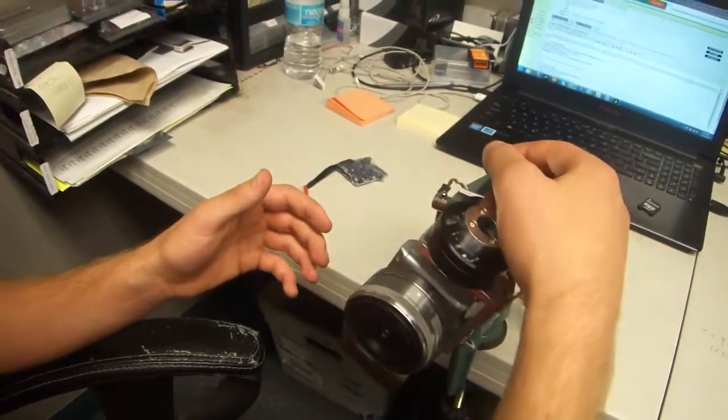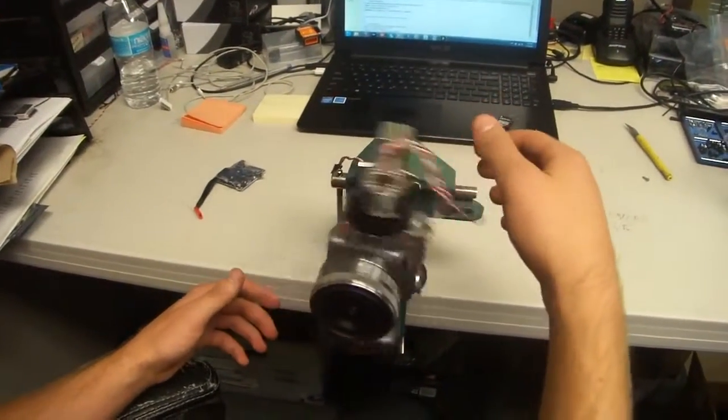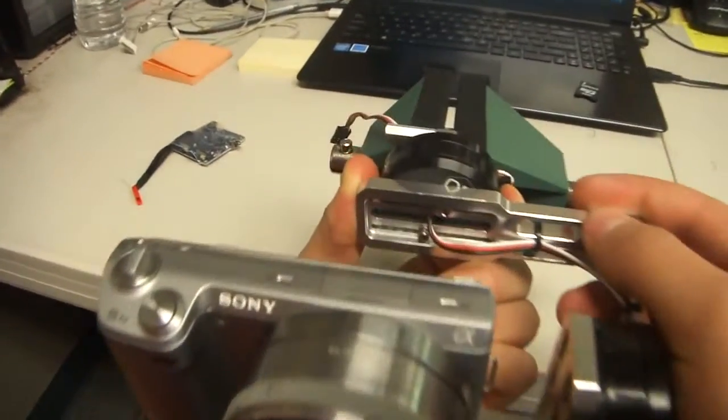So next we're going to do the roll axis. Step two is the roll axis. You can see it's falling over to the left here. So I'm going to push it to the right.